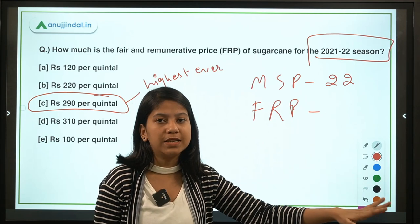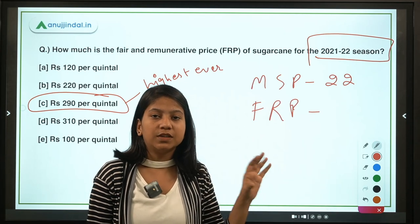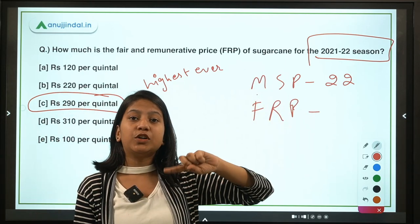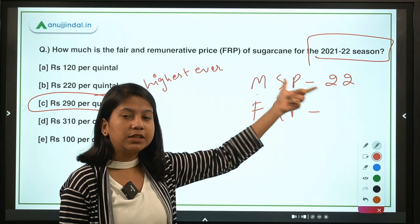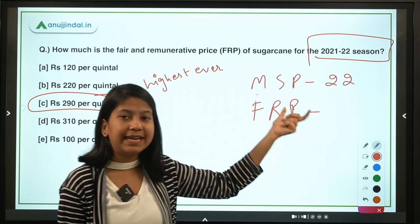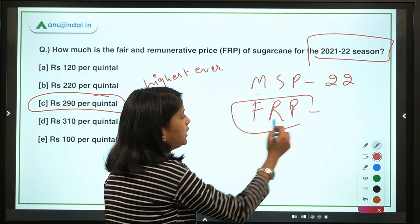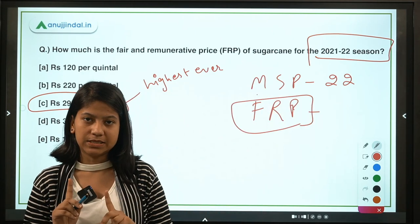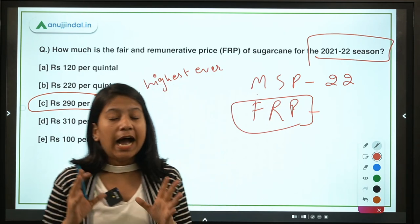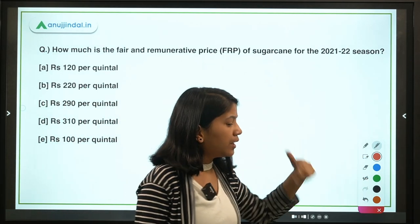Sugarcane can only be purchased by mills because it requires value addition to be converted into sugar. Therefore, FRP is levied on the sugar mills, whereas MSP is a direct mechanism — through MSP the government directly purchases agricultural goods from farmers and then distributes them among the public. MSP is levied on the government and is not legally binding on any private entity. However, FRP is legally binding on sugar mills as the minimum price they must pay sugarcane farmers.